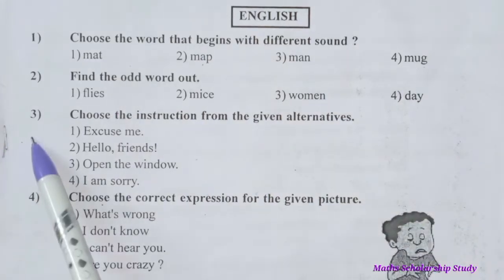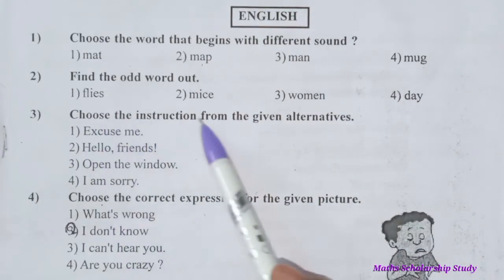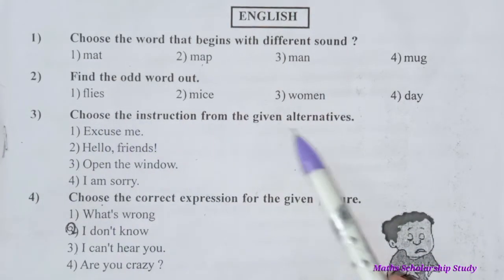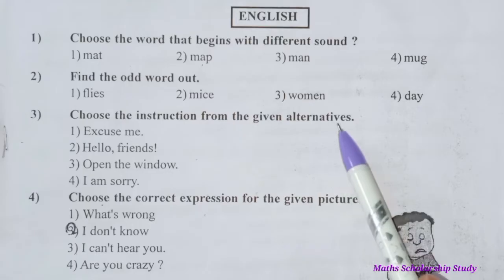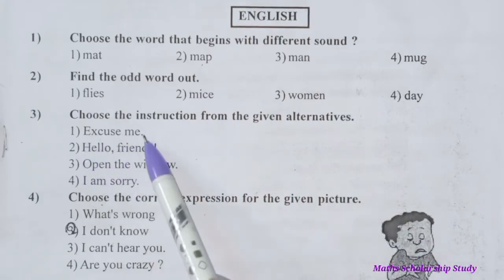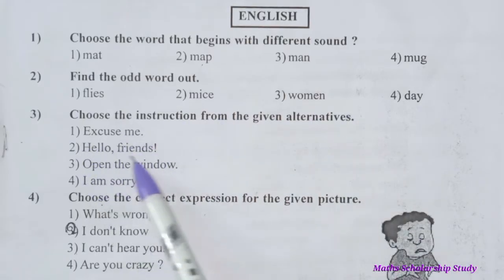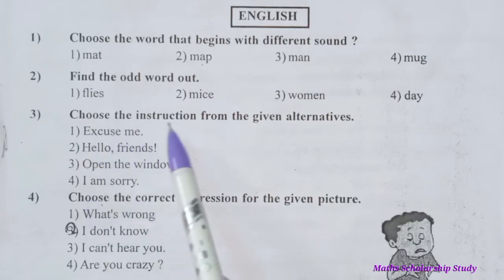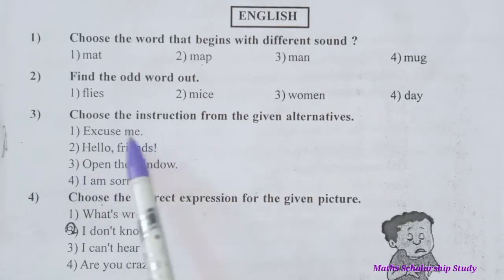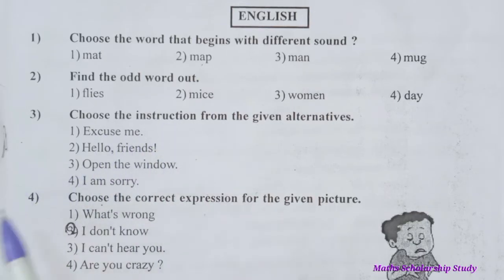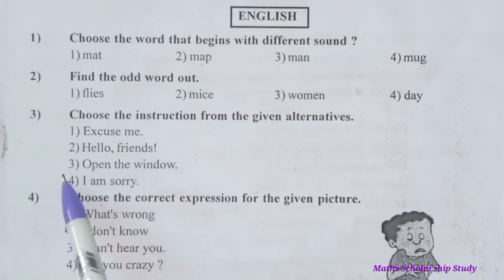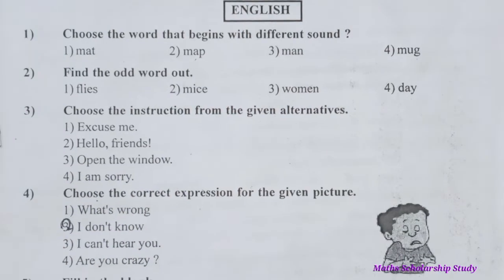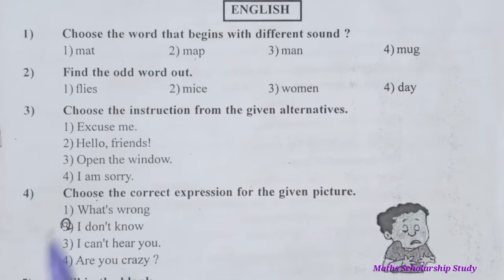Question number three: Choose the instruction from the given alternatives. Options are: excuse me, hello friends, open the window, I am sorry. 'Open the window' is the instruction. Option number three is correct.